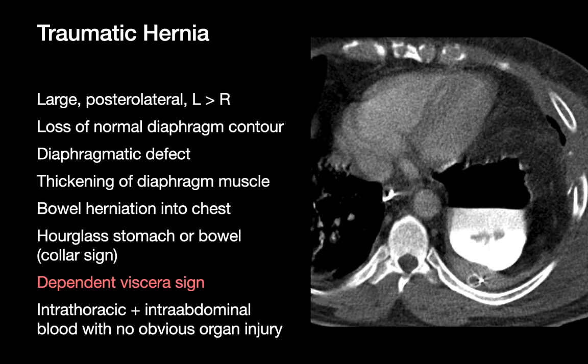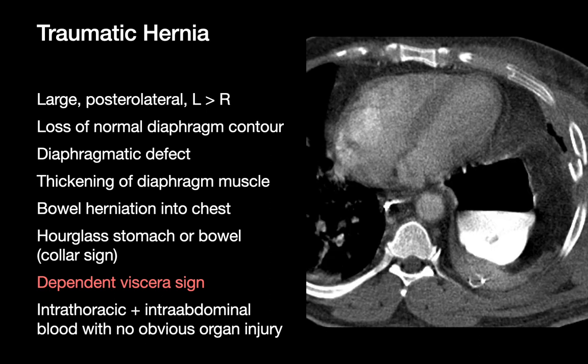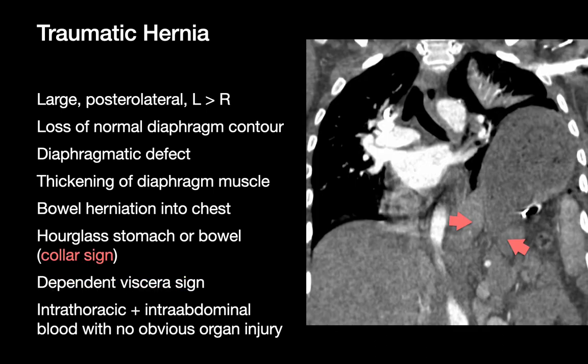Another sign to look for is the dependent viscera sign, where the stomach or bowel closely approaches the posterior rib cage — because normally retroperitoneum should be between viscera and the lower rib cage. One last tip: double-check that you're not missing a traumatic hernia on trauma CTs where you see both intrathoracic and intra-abdominal blood but no obvious organ injury.